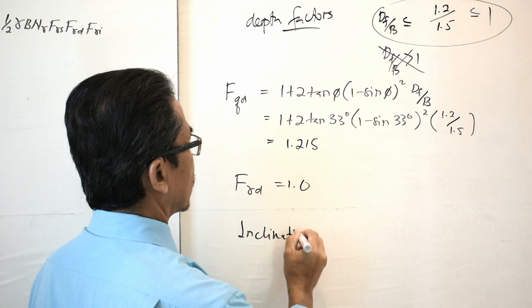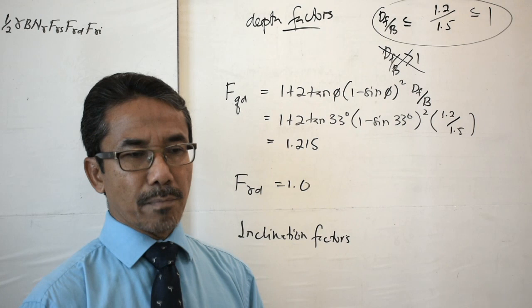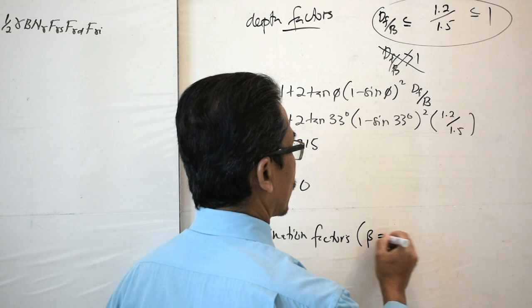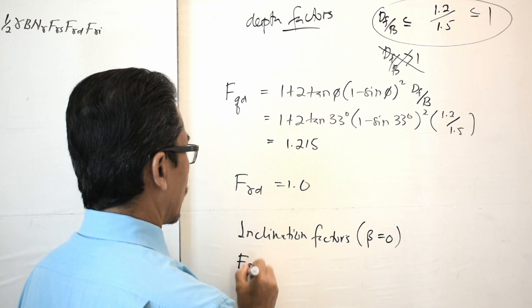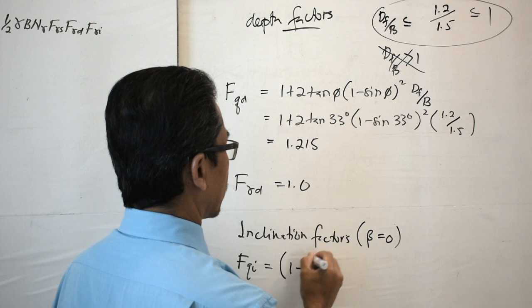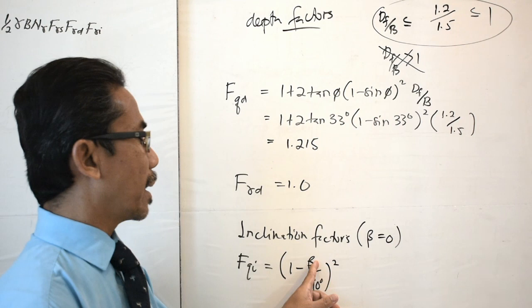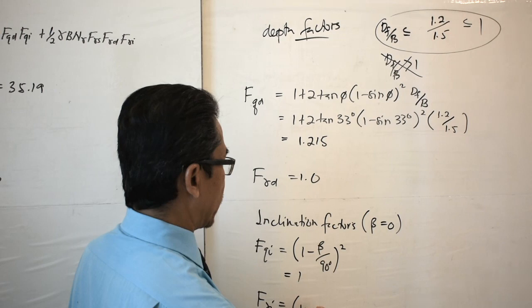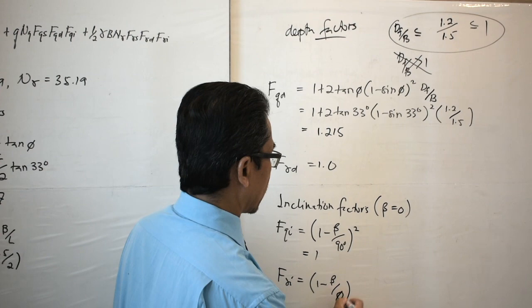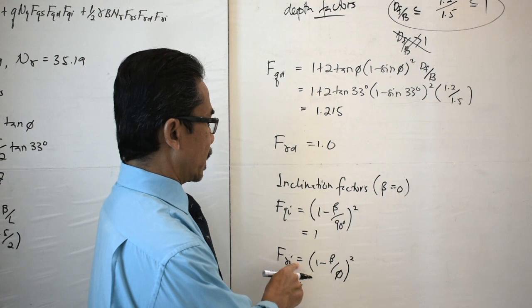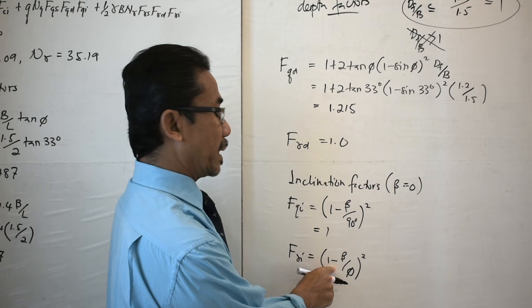For inclination factors, since the load is not stated to be inclined, we assume it is vertical, so beta = 0. Therefore F_qI = (1 − beta/90)² = 1, and F_gammaI = (1 − beta/phi)² = 1. F_gammaD is also equal to 1.